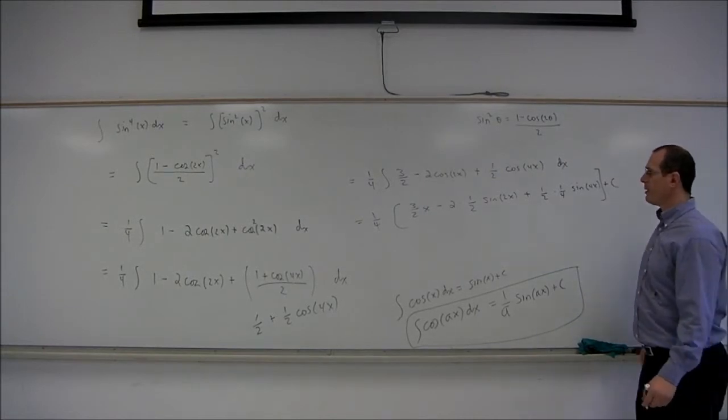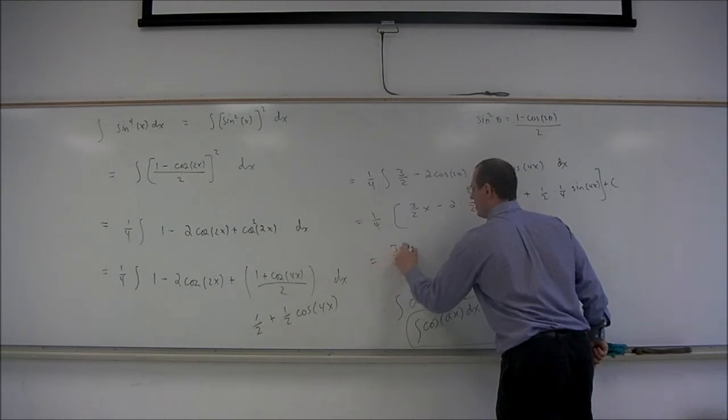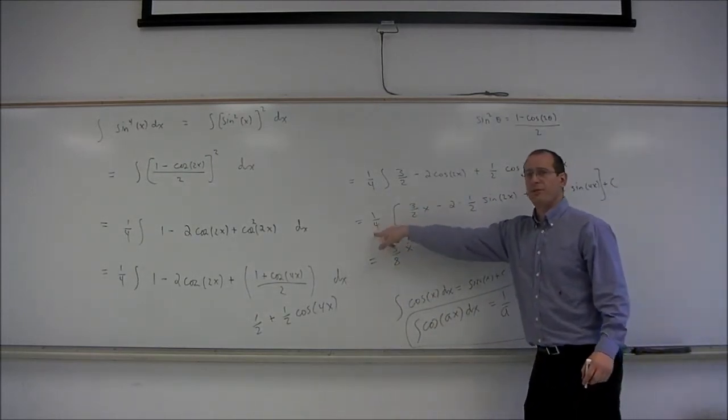We could clean it up a little bit. 1 fourth times 3 halves is 3 eighths x. And the coefficient here, that's 1 fourth.